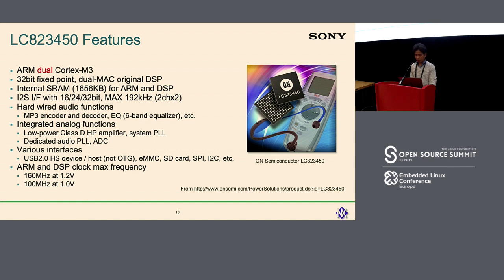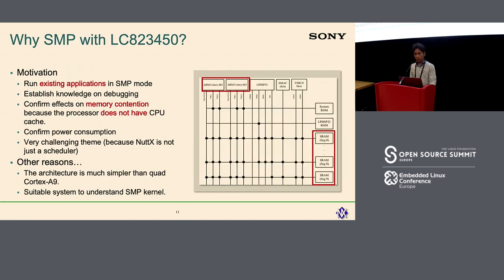This slide shows the processor features we are using for our audio products. This processor has a dual Cortex-M3 running at 160 MHz and has 1.6 megabytes of internal SRAM. Current products use only a single core; however, I've been studying whether we can use the secondary core in SMP mode to increase performance. The reason I've been studying SMP with this processor is that we want to run existing applications in SMP mode to scale up performance. However, this processor does not have a CPU cache, so we need to confirm performance effects related to memory contention.